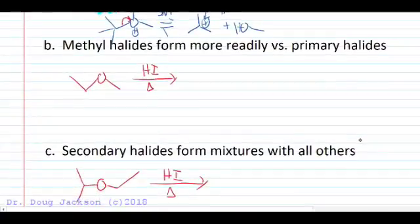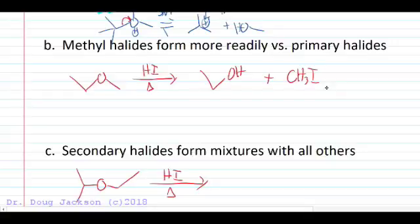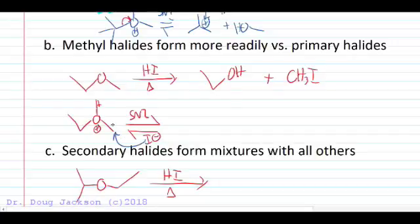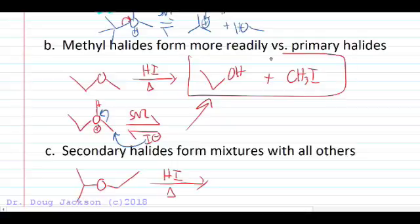A methyl halide is going to form more readily versus a primary halide. Our products here are going to be ethanol and methyl iodide because from our protonated ether in the presence of acid, now we've got an SN2 mechanism that is most active. The less hindered position is going to be what gives us our final products here, methyl iodide and ethanol. So again, methyl halides more readily versus primary.